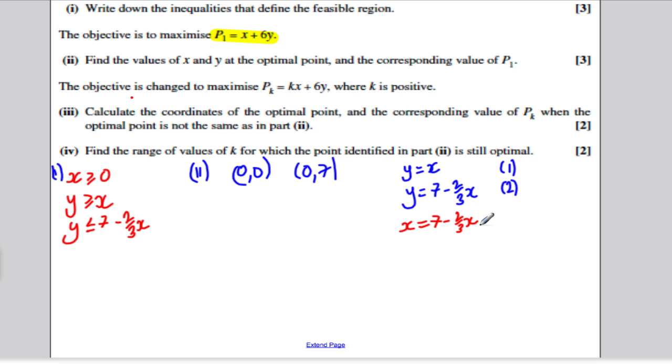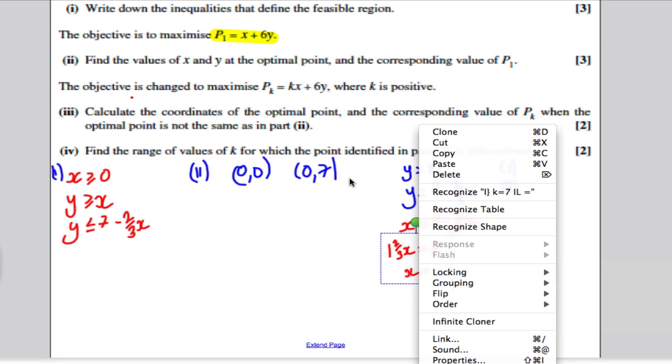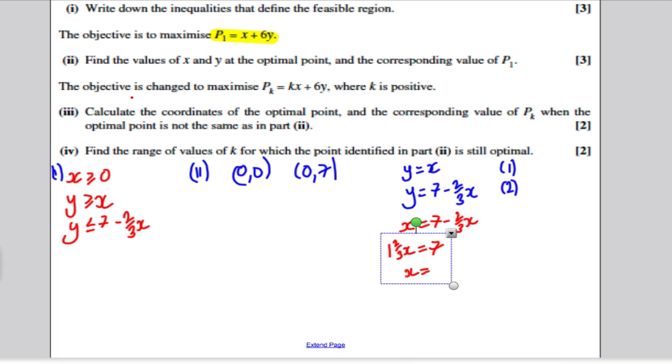Adding 2 thirds X to both sides, we would get 1 and 2 thirds X is equal to 7. To get X, we do 7 divided by 1 and 2 thirds, we would get the answer 4.2 for X. And given that Y equals X is the other equation, the other coordinate must be Y is 4.2.